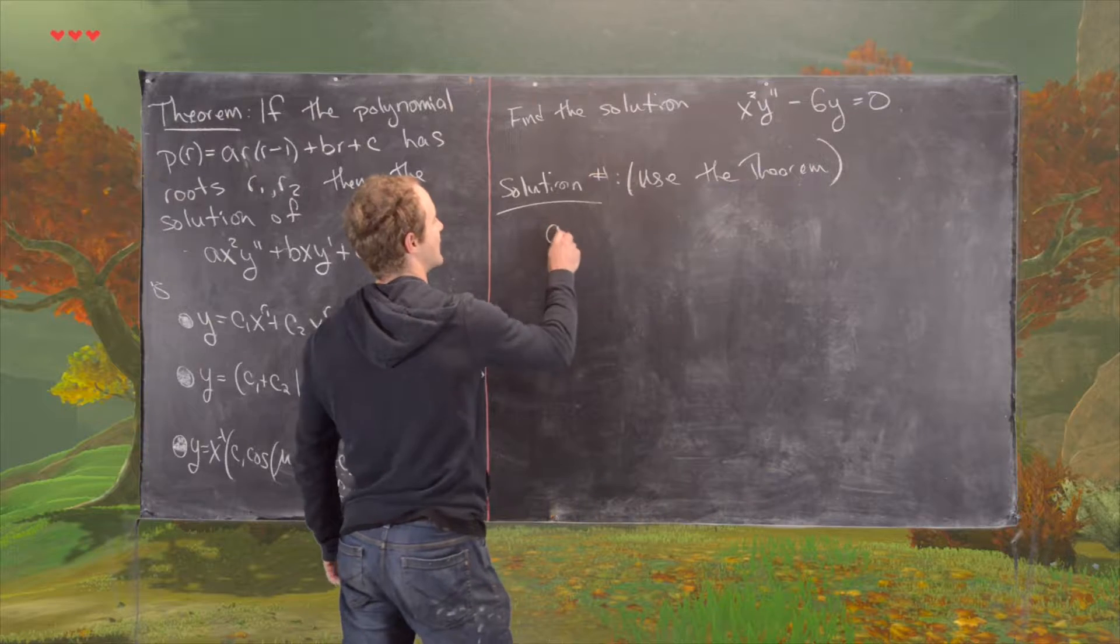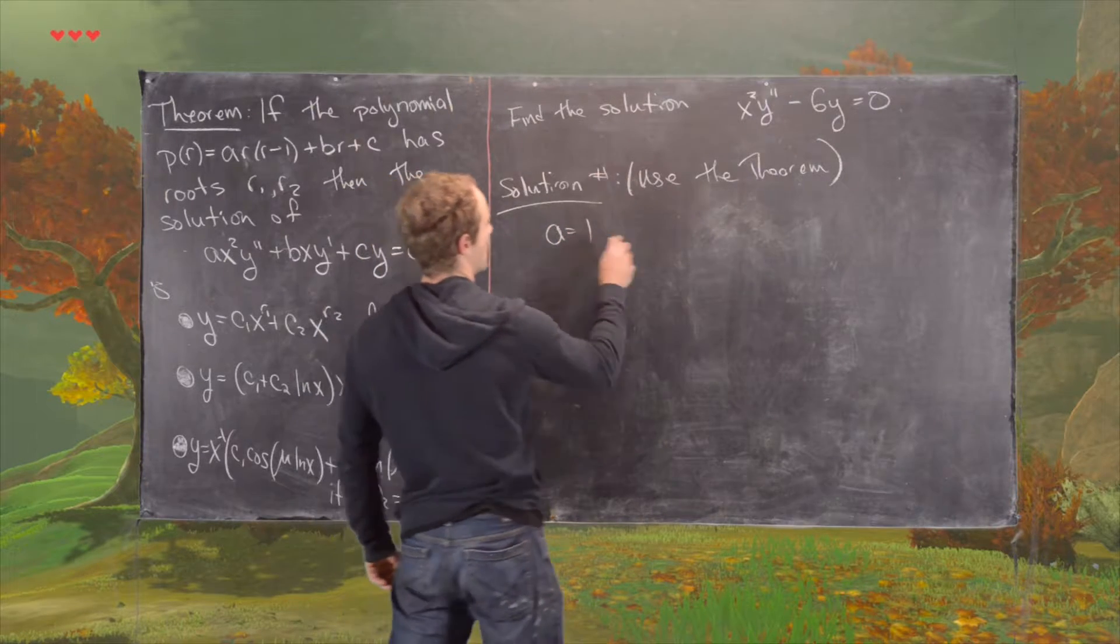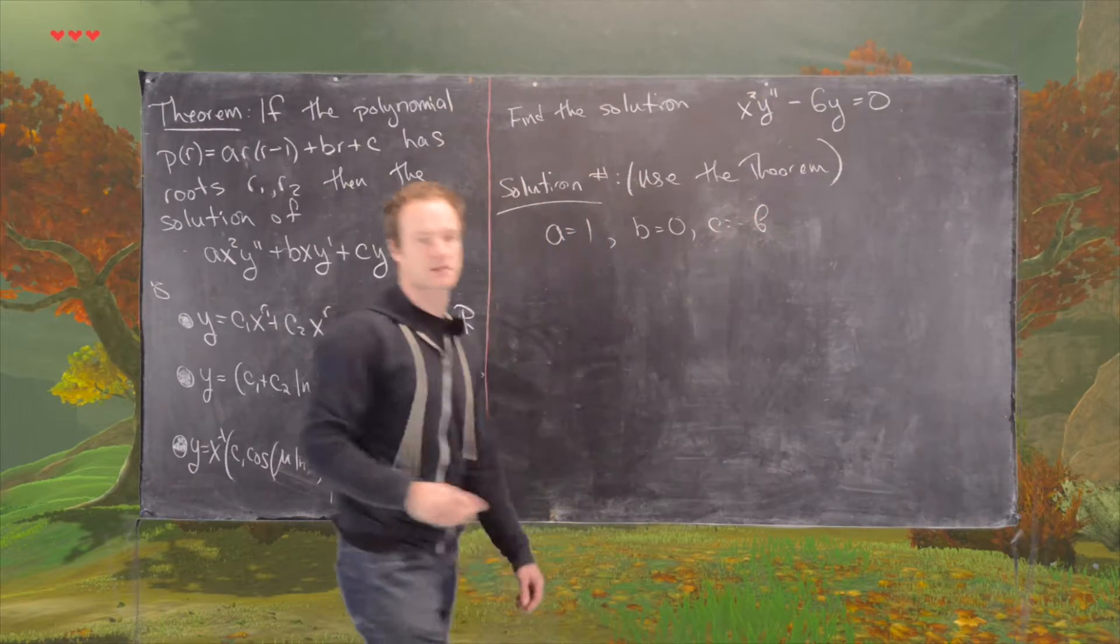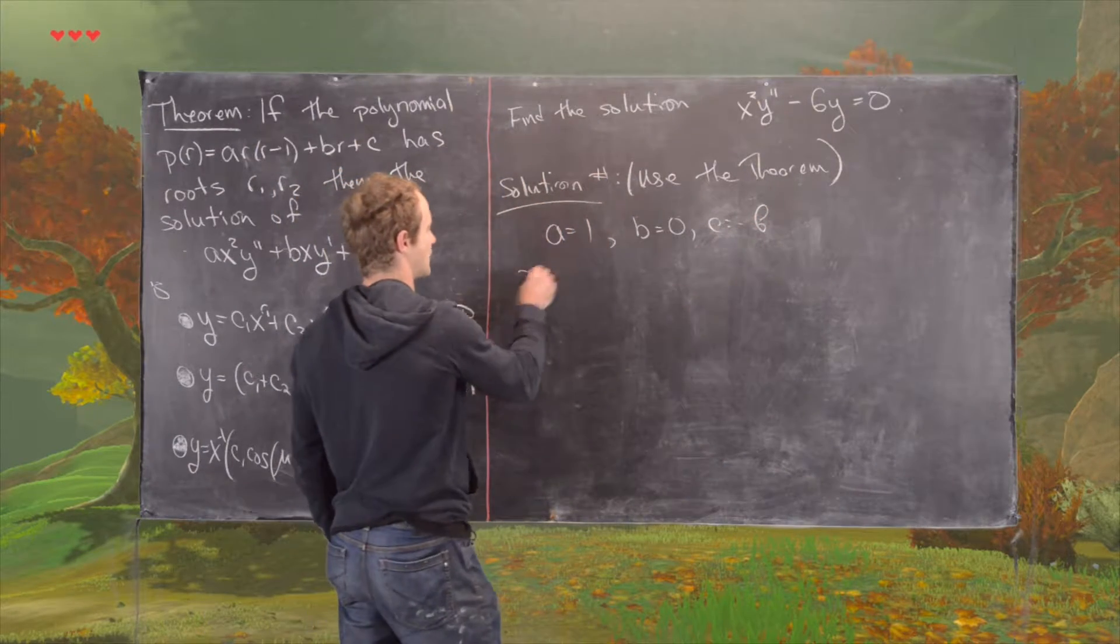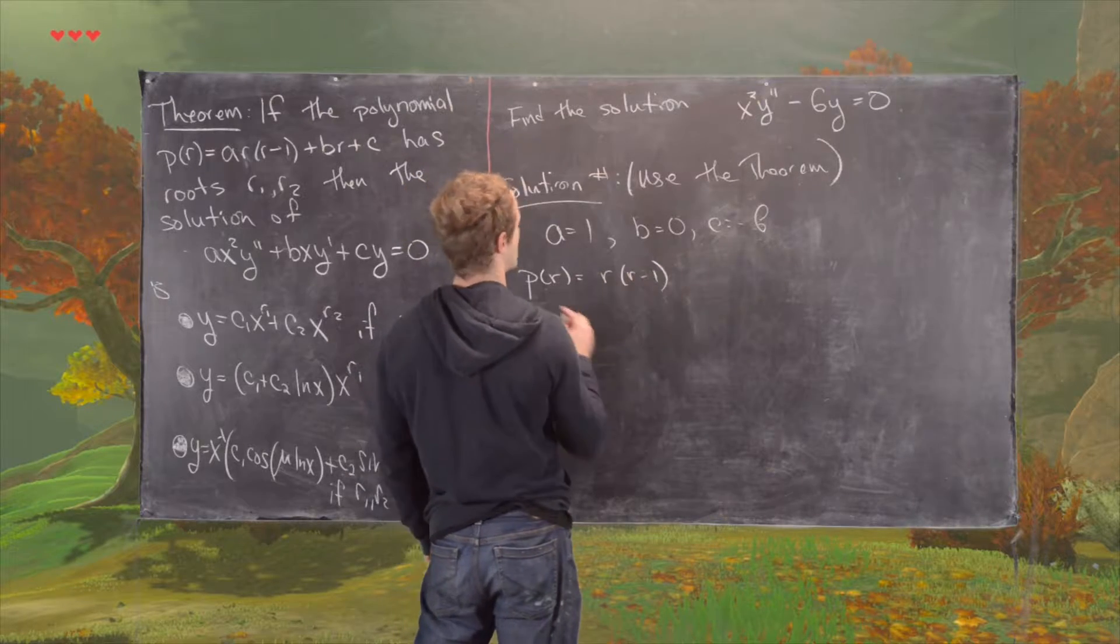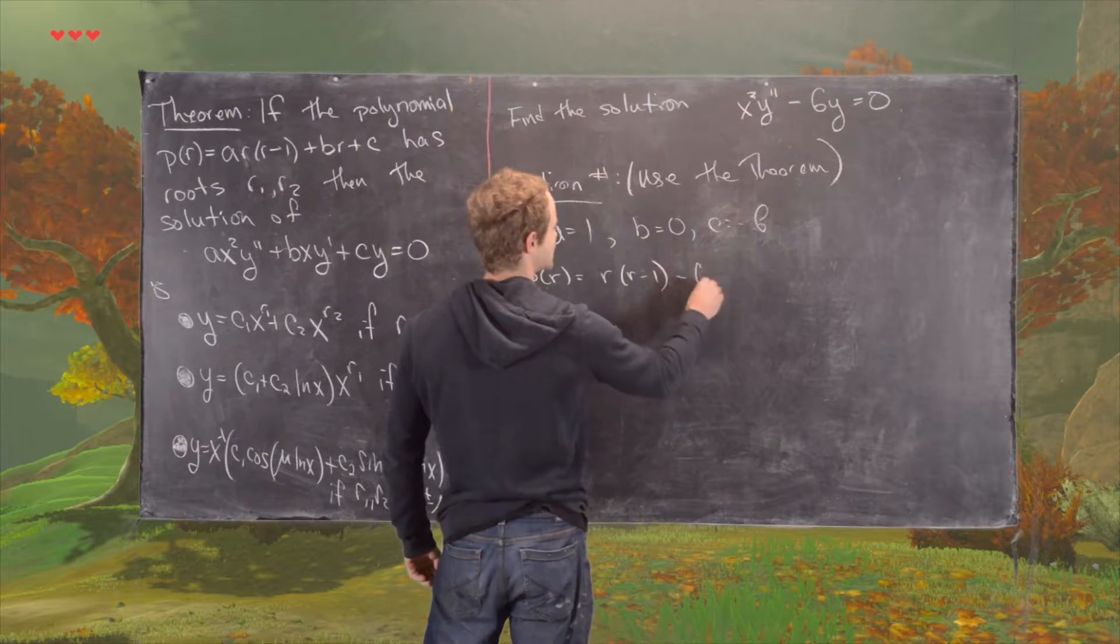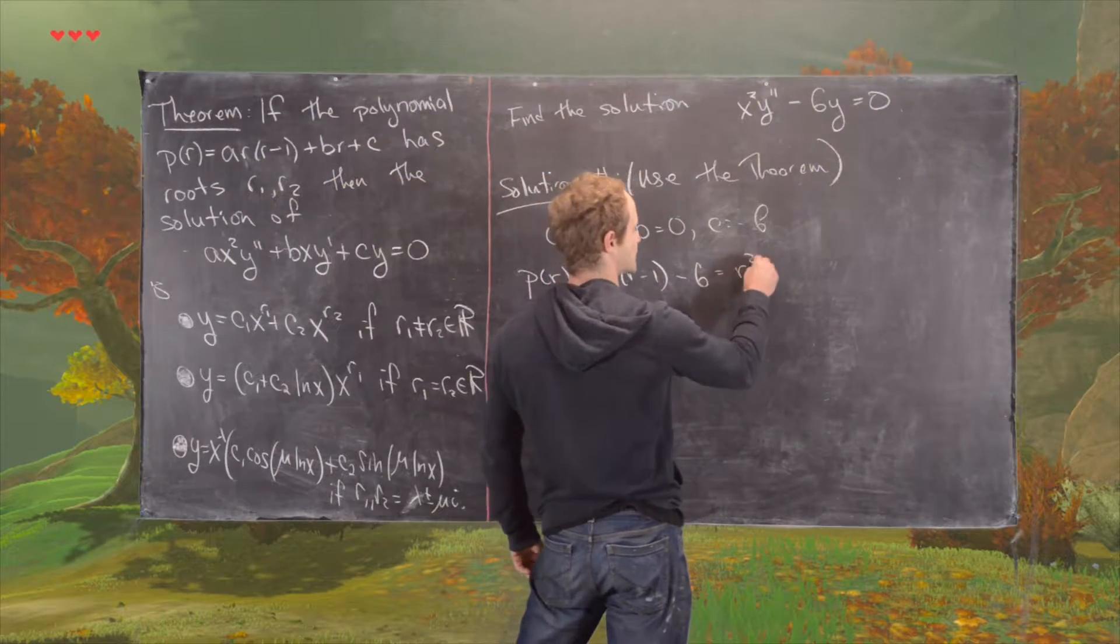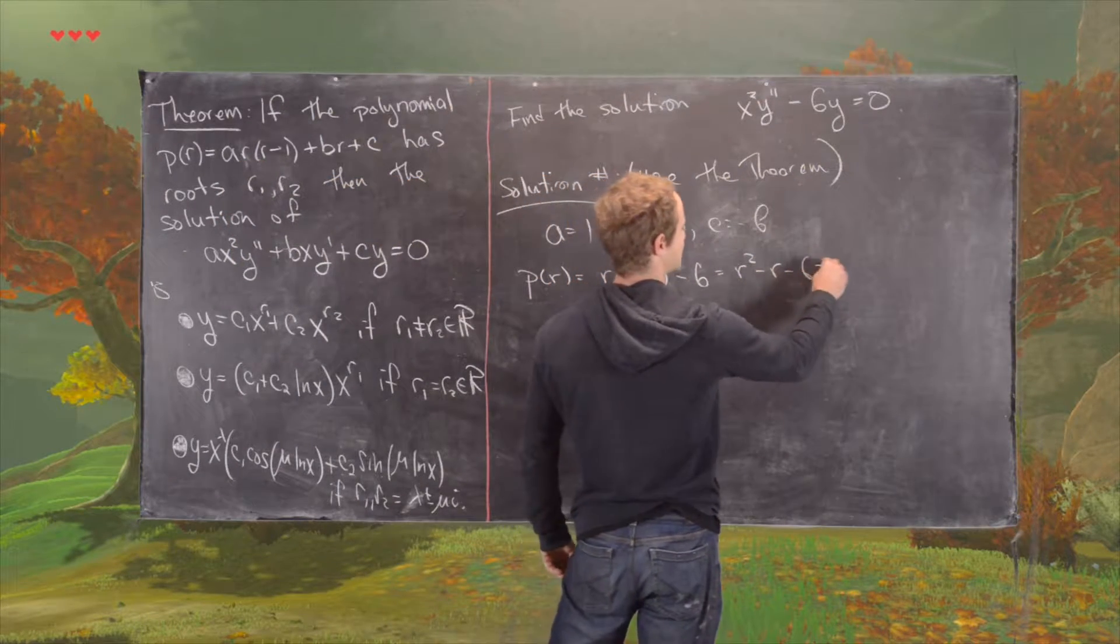So that means we have a equals 1, and then we have b equals 0, and c equals negative 6, which tells us that our polynomial p of r is r times r minus 1 minus 6. Which is going to be r squared minus r minus 6.